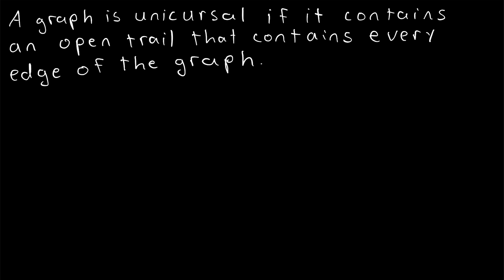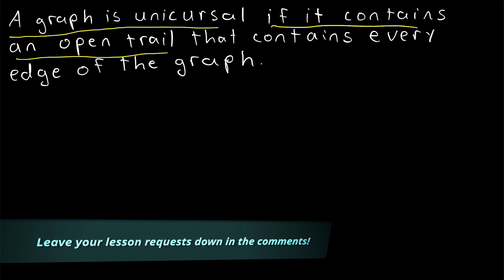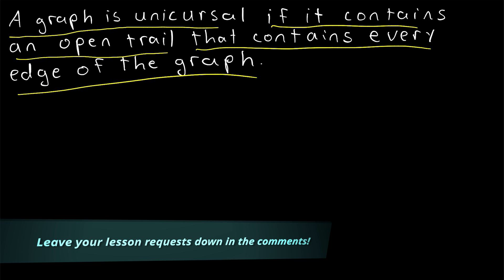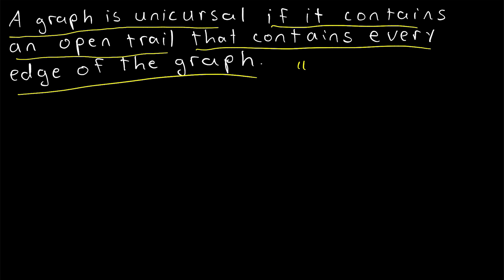Hey everyone. In today's Wrath of Math lesson we're going to talk a bit about unicursal graphs and unicursal lines. A graph is said to be unicursal if it contains an open trail that contains every edge of the graph. Such an open trail is called a unicursal line.